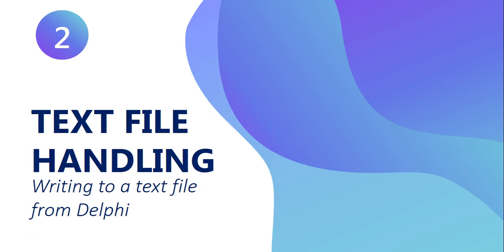This is part two of our text file handling video series, where we're looking at how we can interact with text files from Delphi. In this video, part two, we're going to be looking at how we put information from Delphi into a text file — in other words, how do we write to a text file? You'll notice there are a few similarities between what we do when we read compared to when we write, but there are things that are slightly different.